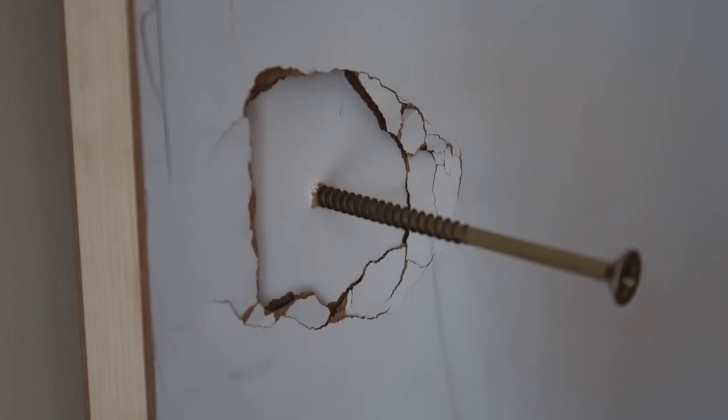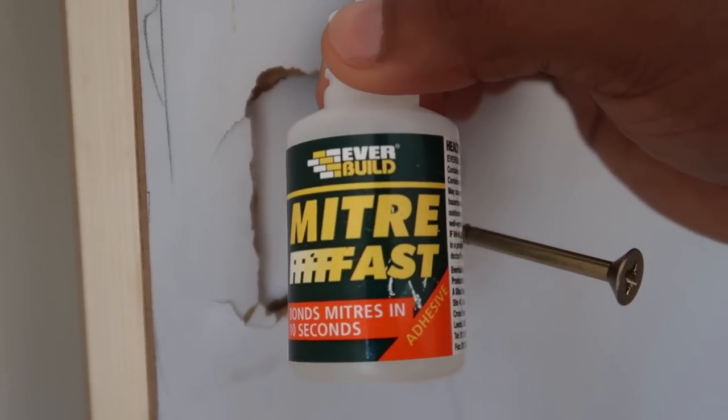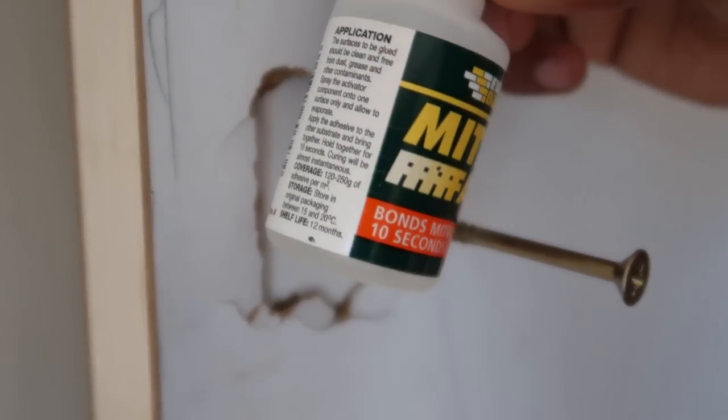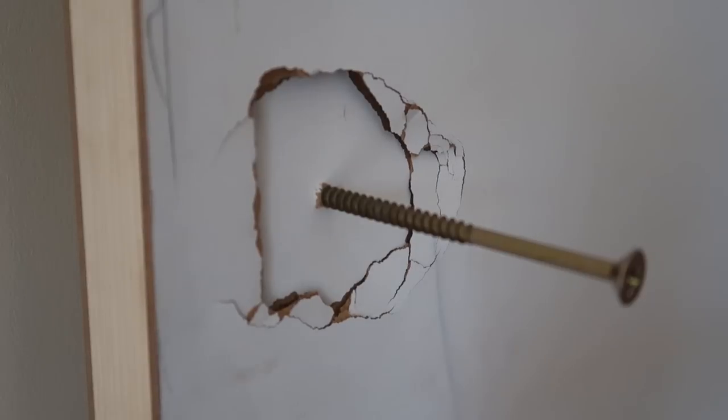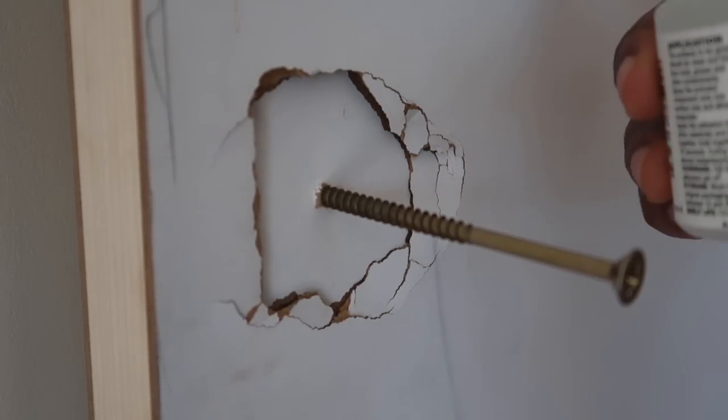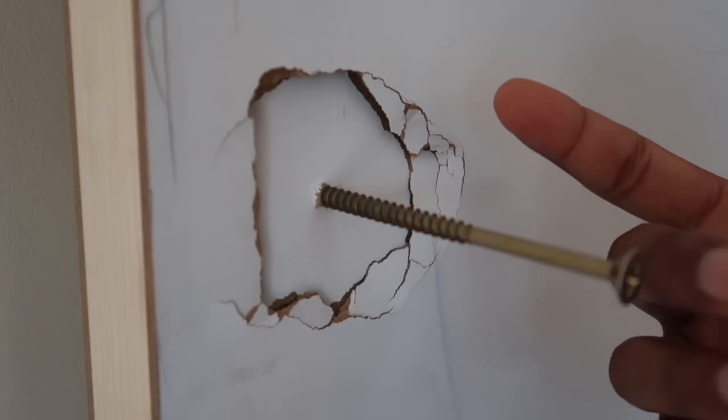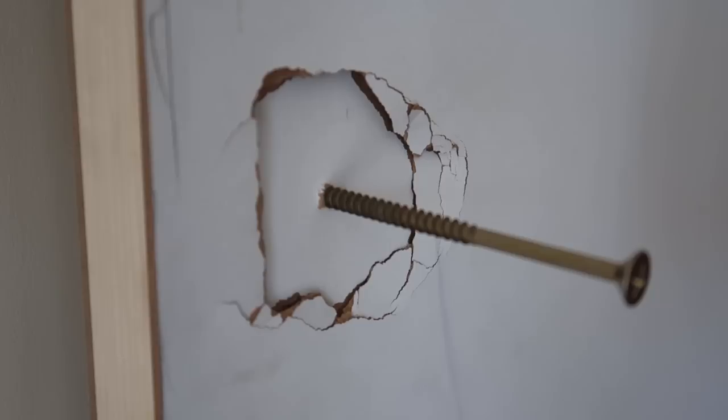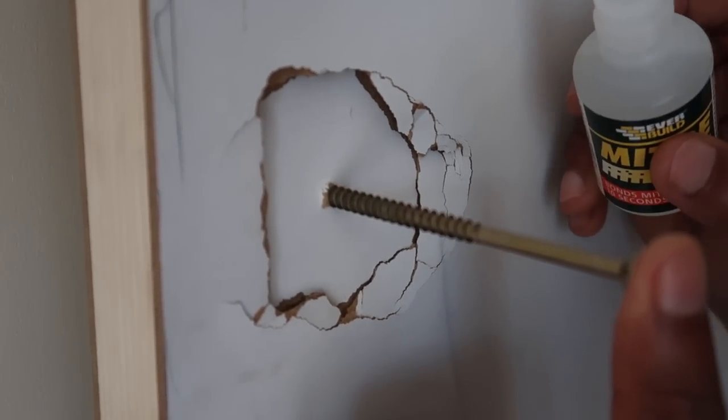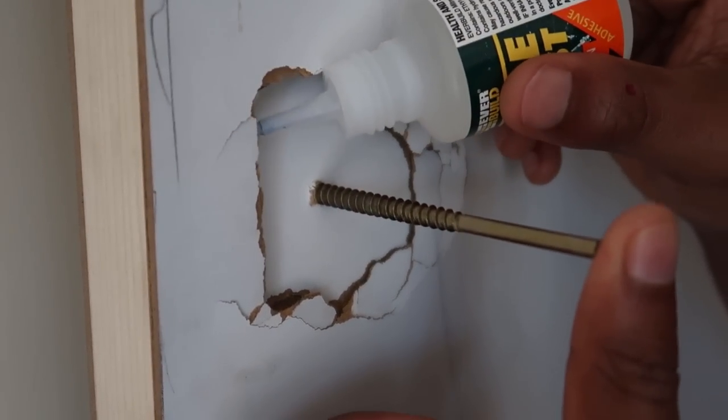Here I've got this stuff called Everbuild Mitre Fast. You basically put this glue around where you want it to adhere to and then you spray it with this aerosol. It's like an activator which basically sets it off really hard, really quickly. I think it's instantly actually.